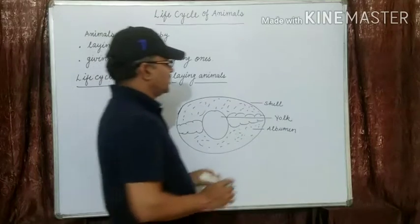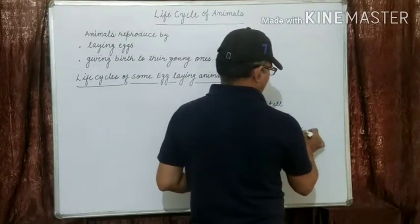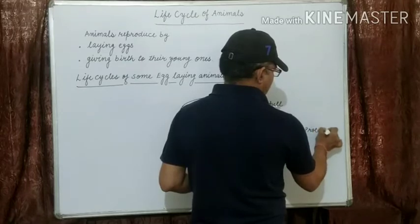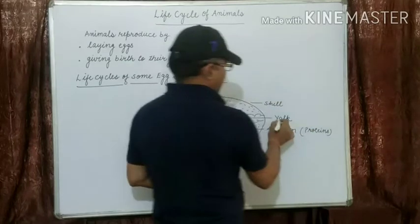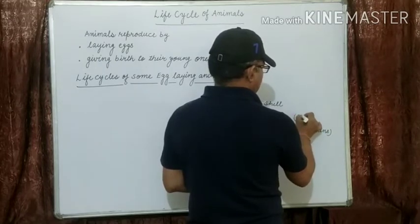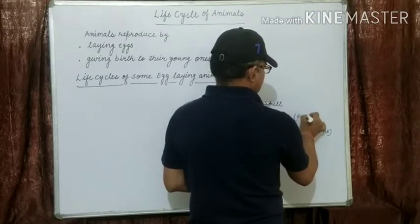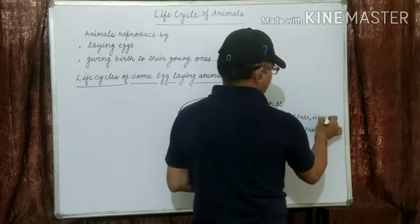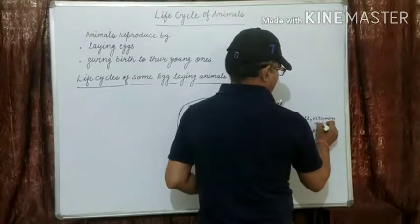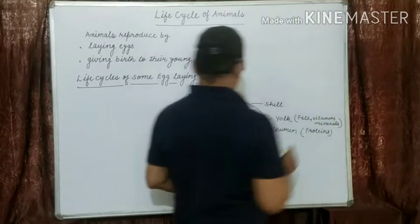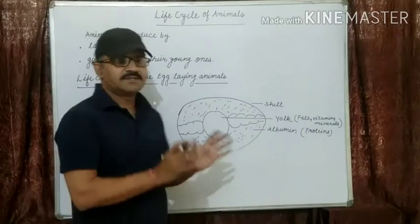Albumin is rich in proteins. Yolk is rich in fats, vitamins, and minerals. So the egg has three parts: the outer hard but thin protective shell, the yolk, and the albumin.